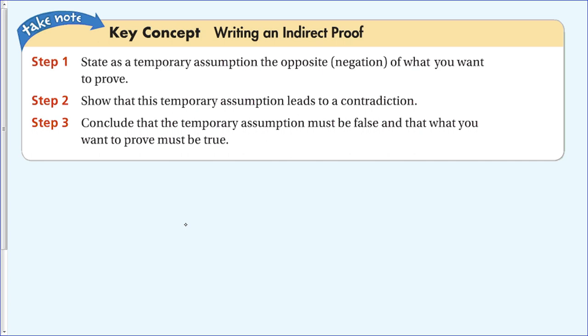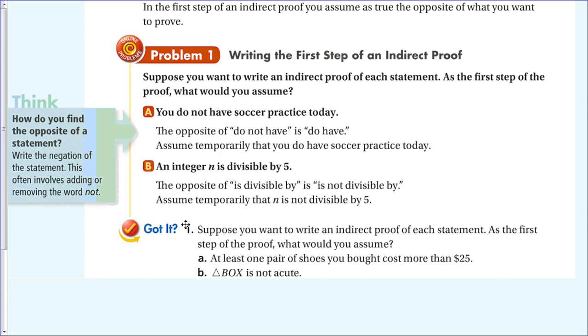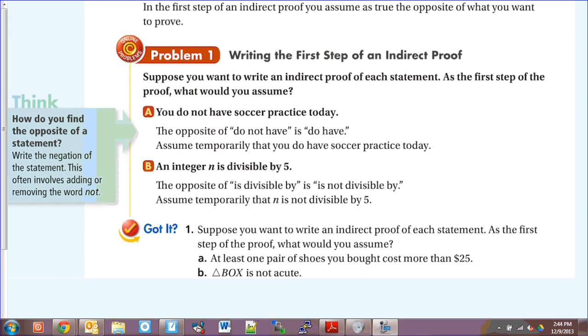Step three: conclude that the temporary assumption must be false and what you want to prove must be true. So once you show that the sky is blue using a known fact, you conclude the temporary assumption is false and the sky is indeed blue. Now let's look at examples. In the first step of an indirect proof, you assume as true the opposite of what you want to prove.